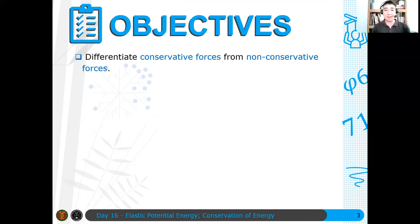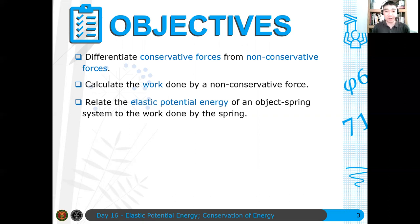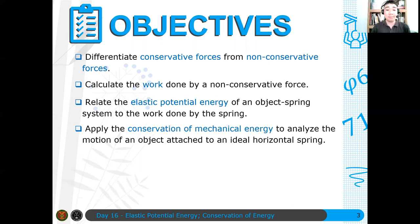We first differentiate conservative from non-conservative forces — this is basically a remnant of what we should have discussed yesterday. We then calculate the work done by a non-conservative force, which is important especially when we go to systems with non-conservative forces. What will be the energy conservation law in that case? We also relate the elastic potential energy of an object-spring system to the work done by the spring — similar to what we did for gravitational potential energy, we motivate the definition of elastic potential energy using the work done by the spring. We then apply conservation of mechanical energy to analyze the motion of an object attached to an ideal horizontal spring — ideal meaning the mass of the spring is negligible and it always follows Hooke's law. Finally, we express conservation of mechanical energy qualitatively and quantitatively.